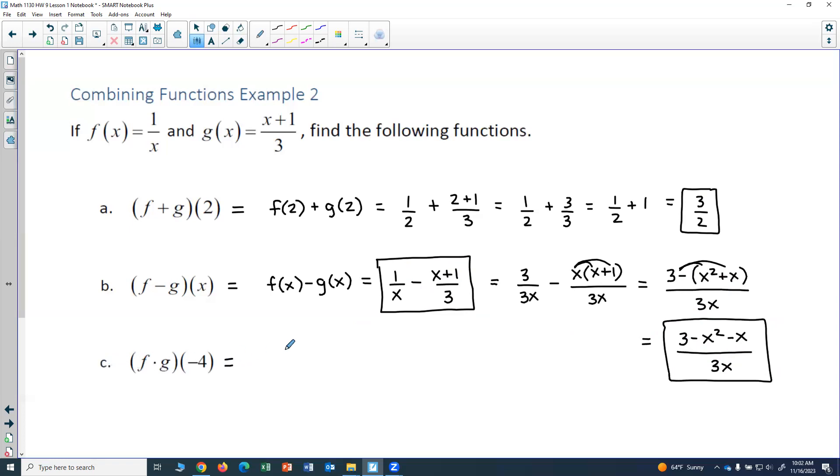Part C asks us to multiply f times g of negative 4. So using the definition where I multiply two functions, this would actually be f of negative 4 times g of negative 4. So I'll plug negative 4 into each function, and then simplify.